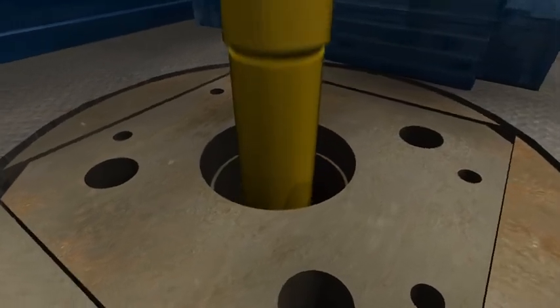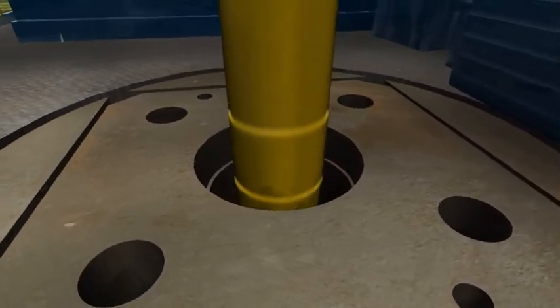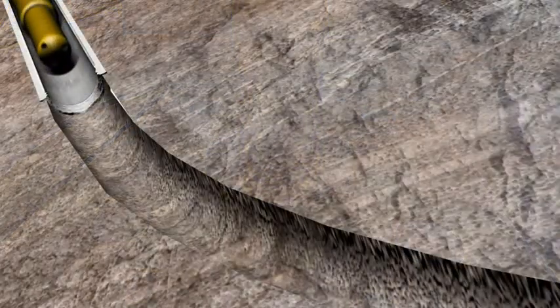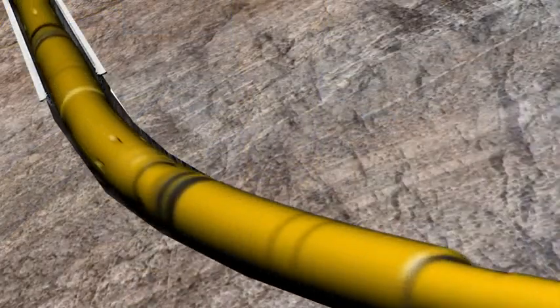The short radius packers and ball activated frac sleeves are strategically placed in the completion liner using casing to place them at the desired depth for maximum efficiency.